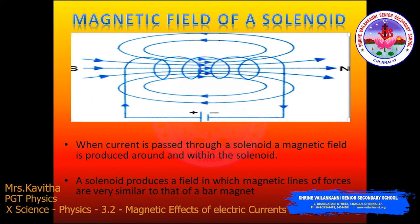The end of the solenoid at which the current flows in an anticlockwise direction behaves as a magnetic north pole. We can conclude that the solenoid produces a magnetic field in which the lines of force are very similar to those of a bar magnet.